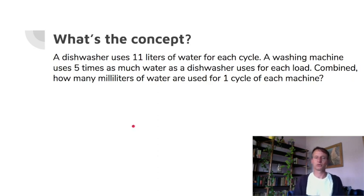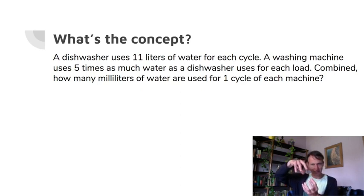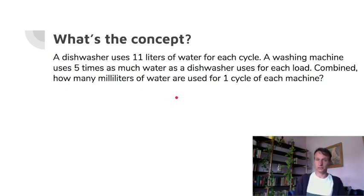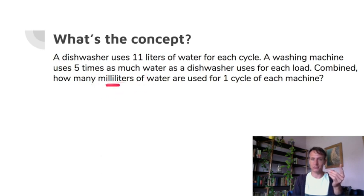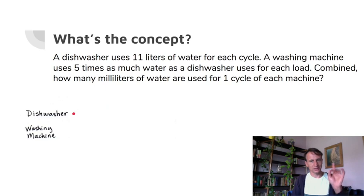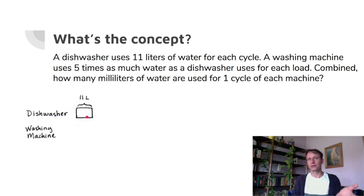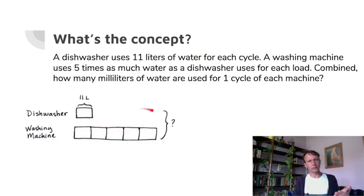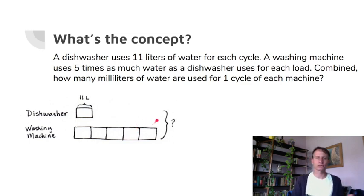A dishwasher uses 11 liters of water per cycle — picture a liter bottle, about this big. A washing machine uses five times as much water as a dishwasher per load. Combined, how many milliliters are used for one cycle of each machine? Again, here's a shortcut: the bracket covers both machines, so instead of calculating separately and combining, just notice that five plus one equals six groups.